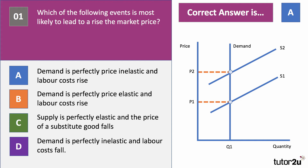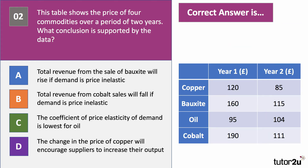Let's move on to question number two. The table shows the price of four commodities over a period of two years: copper, bauxite, oil and cobalt. What conclusion is supported by the data? Press the pause button and we'll be back in a few seconds with the right answer. The correct answer is B: total revenue from cobalt sales will fall if demand is inelastic.